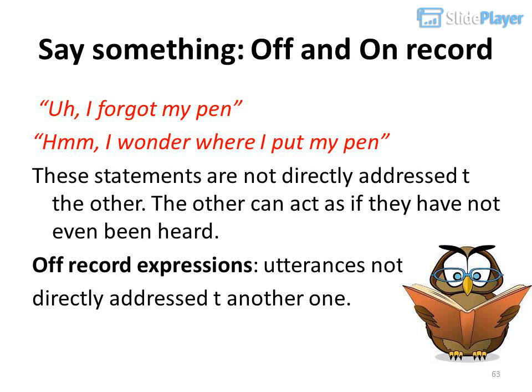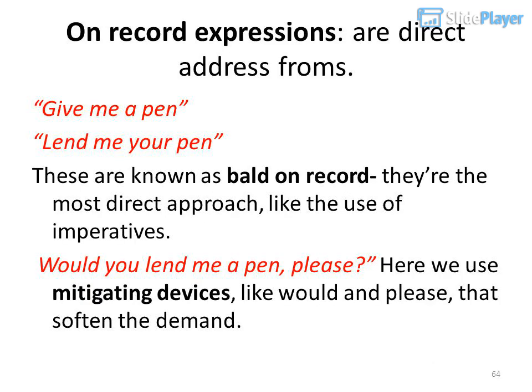Say Something — Off and On Record. 'I forgot my pen' / 'I wonder where I put my pen' — these statements are not directly addressed to the other. The other can act as if they have not even been heard. Off-record expressions: utterances not directly addressed to another. On-record expressions are direct address forms — 'Give me a pen,' 'Lend me your pen' — known as bald on-record, the most direct approach using imperatives. 'Would you lend me a pen, please?' uses mitigating devices like 'would' and 'please' that soften the demand.